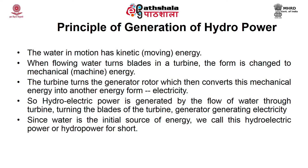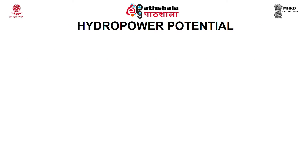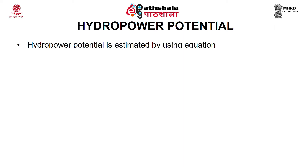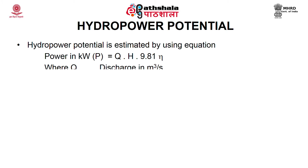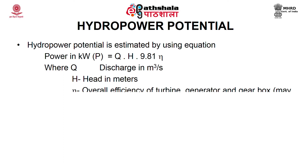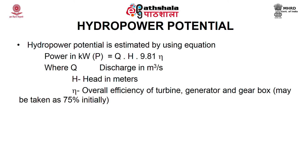Hydropower potential is estimated by the equation: Power P (in kilowatt) = Q × H × 9.81 × η, where Q is the discharge in cubic meters per second, H is the head in meters, and η is the overall efficiency from the turbine, generator, and gearbox. Normally 75% is used as the η value.